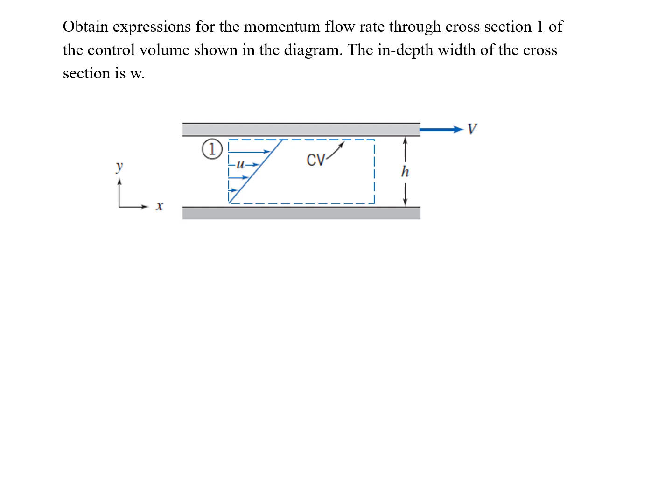The first problem is to calculate the momentum flow rate between two plates, where one plate — the top plate — is moving at speed V, and the bottom plate is stationary. The problem asks us to calculate the momentum flow rate through the cross-sectional area, where the in-depth width of the cross section is w. For momentum flow rate, we know from the linear momentum equation that the second term is the momentum flow rate, so we just need to evaluate this on cross area one. In this area, velocity is u, and we need to figure out u as a function of y.